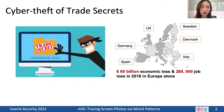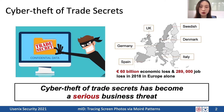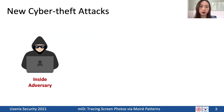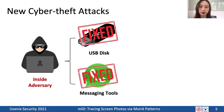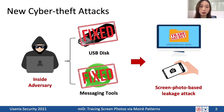Nowadays, cyber theft of trade secrets has become more and more common. It refers to leaking sensitive business information such as digital documents over cyberspace. In 2018, it caused €6 billion economic loss in Europe alone. Such cyber thefts usually involve insider adversaries who access confidential files legally but leak them via USB disks or messaging tools. As a result, attackers now photograph the computer screen displaying confidential information with a smartphone and share the photo — we refer to this as a screen photo-based leakage attack.